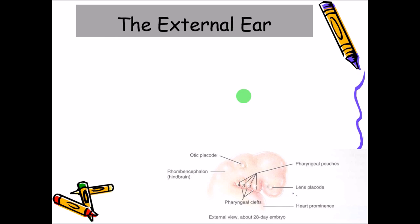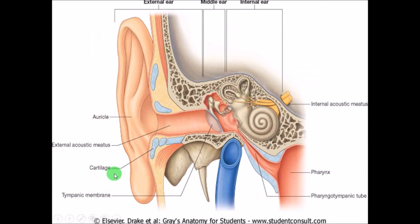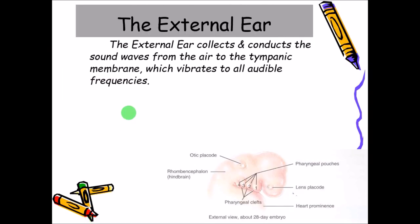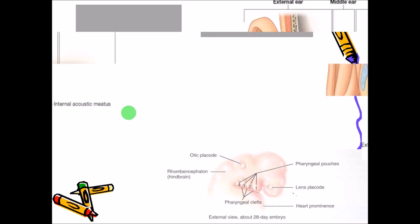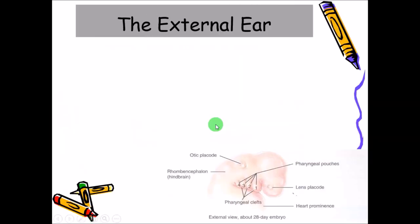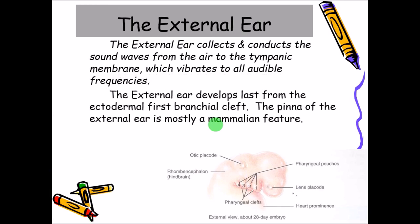The structure of the external ear itself is very suitable for the conduction as well as the collection of sound waves travelling in the air, and they will be transmitted to the tympanic membrane. Here is the tympanic membrane — the sound waves hit the auricle or pinna and are transmitted through this tube to the tympanic membrane.